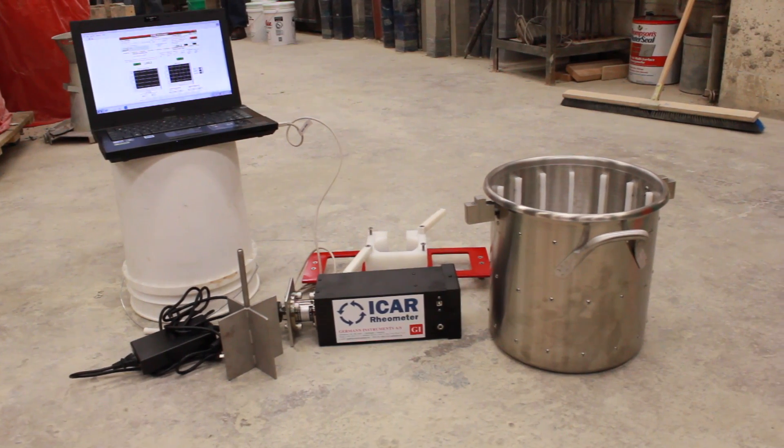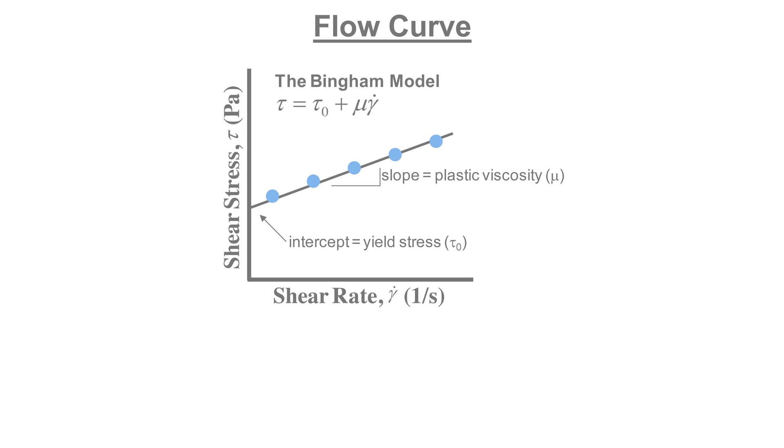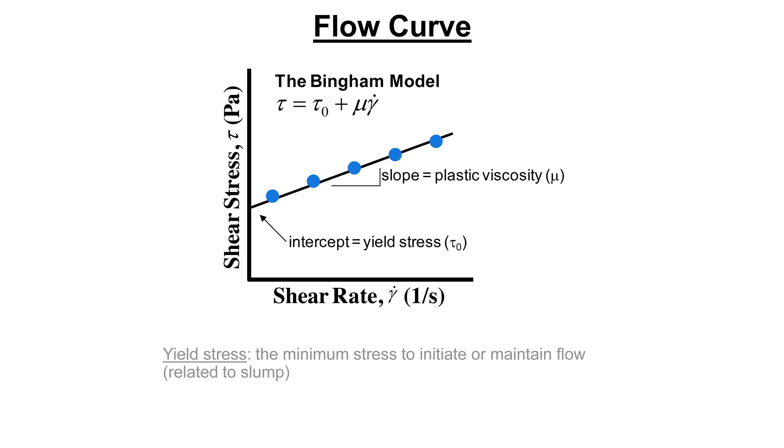For concrete, this relationship is often described with a Bingham model. The Bingham model relates the shear stress and shear rate by a straight line. The intercept of this line is the yield stress. The plastic viscosity is then the slope of the line, and the plastic viscosity describes resistance to flow once the yield stress is exceeded.